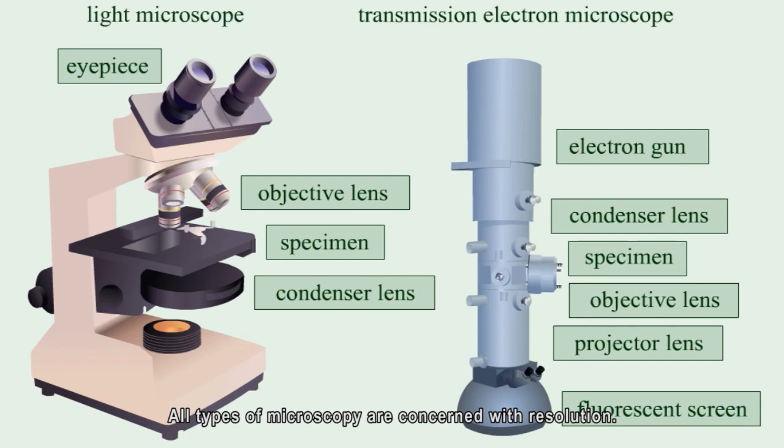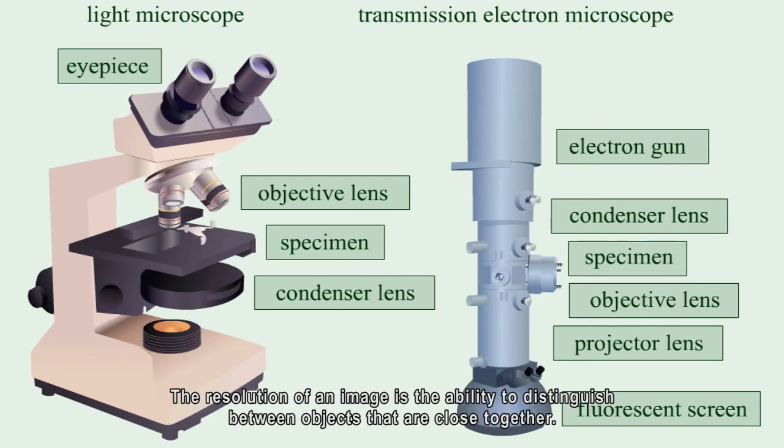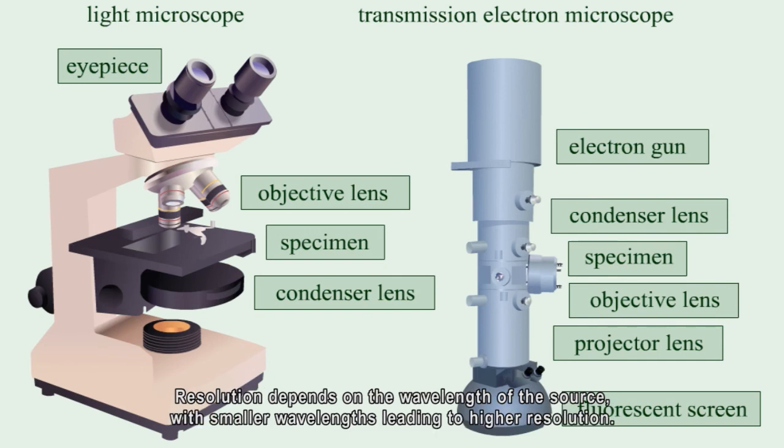All types of microscopy are concerned with resolution. The resolution of an image is the ability to distinguish between objects that are close together. Resolution depends on the wavelength of the source, with smaller wavelengths leading to higher resolution.